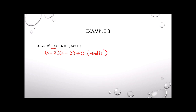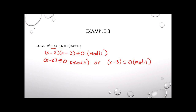We've got two numbers multiplied together equaling 0 with a prime modulus, and that's really important. If the mod is prime, then either one factor is 0 mod 11 or the other factor is 0 mod 11. If the mod weren't prime — say it was 8 — two non-zero numbers could multiply to 0, like 2 times 4 mod 8. So we can't use this factoring property unless the mod is prime.